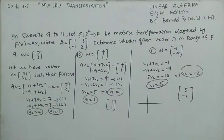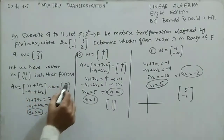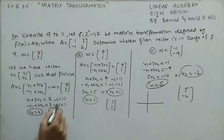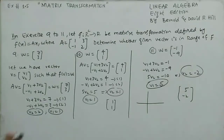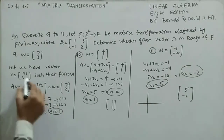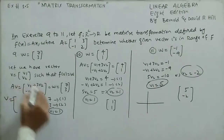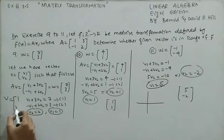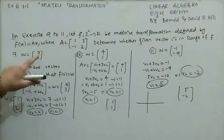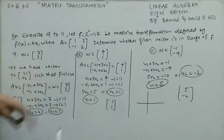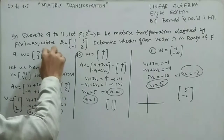We have two linear equations: v1 + 3v2 = 7 and -v1 + 2v2 = 3. Solving this linear system gives v1 = 1, v2 = 2. So v = (1,2). Since (1,2) does not lie in the range corresponding to w = (7,3) — checking the range constraints, the values don't satisfy the range — the answer is no.